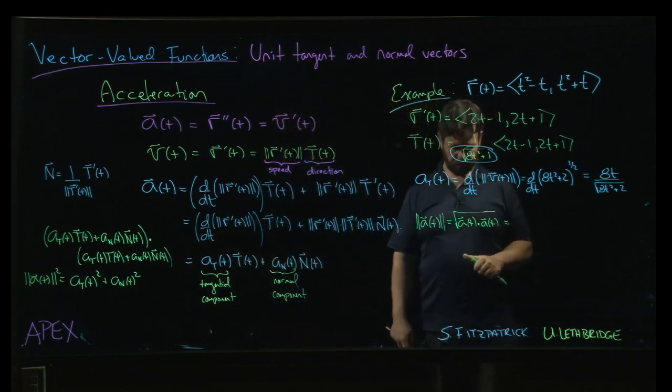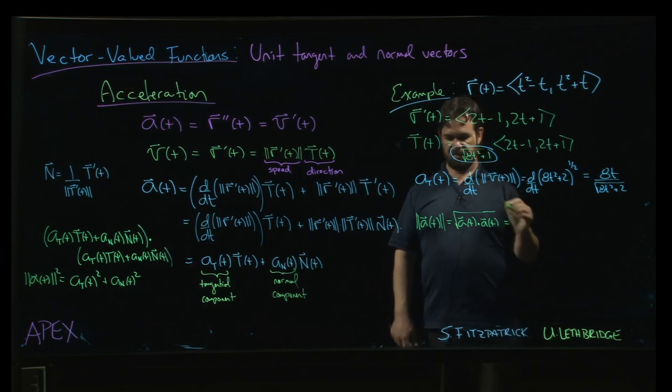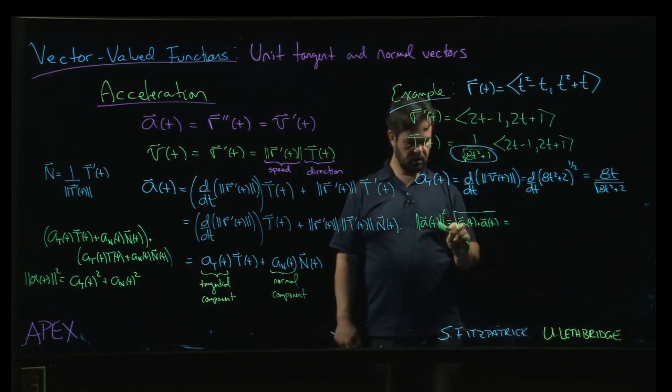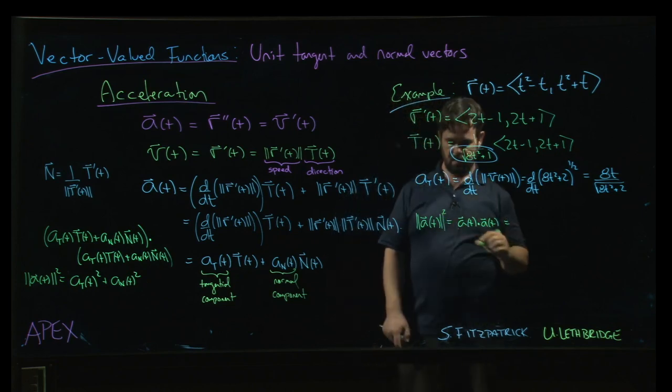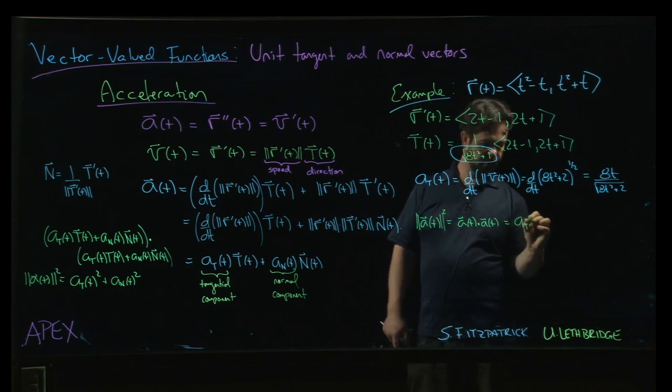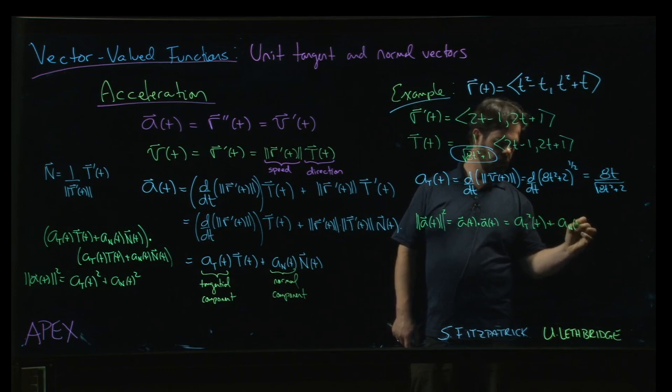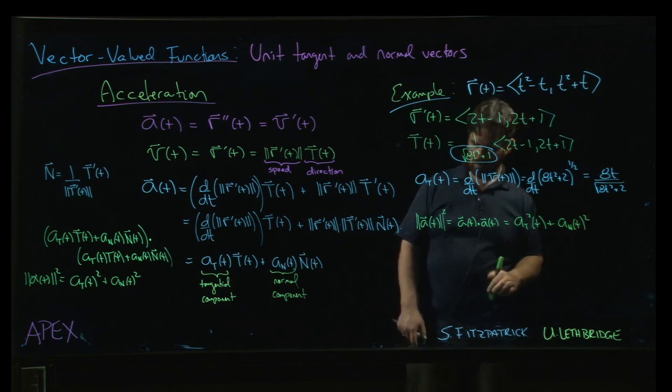So, basically what we can do, let's get rid of the square root, okay? So the magnitude squared is the tangential part squared plus the normal part squared, okay?